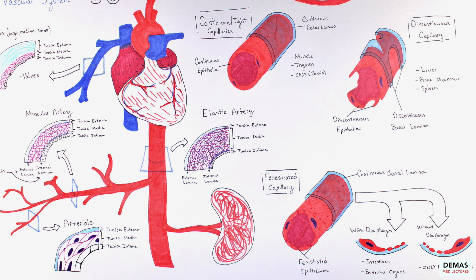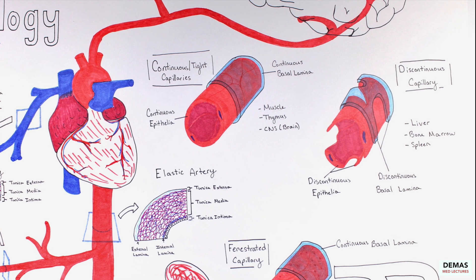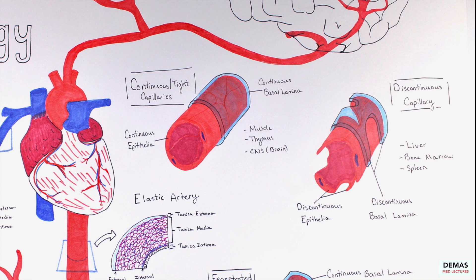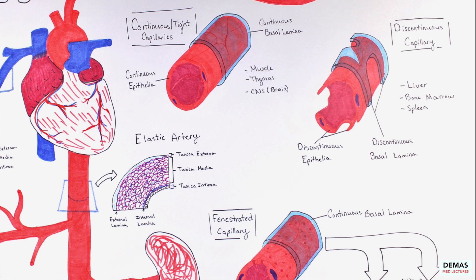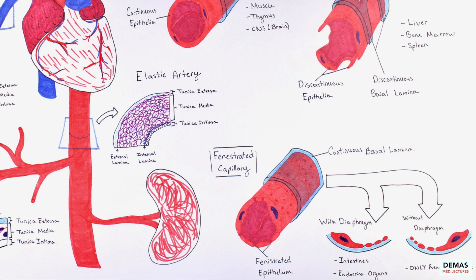The location of these capillaries is often related to the needs of the tissue they are supplying, and make sure you review the types of tissue they supply as this is important. For example, that continuous capillaries supply the brain, and the renal glomerulus has fenestrated capillaries without diaphragms.